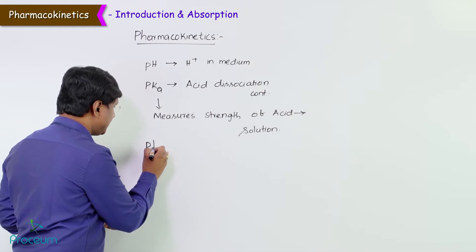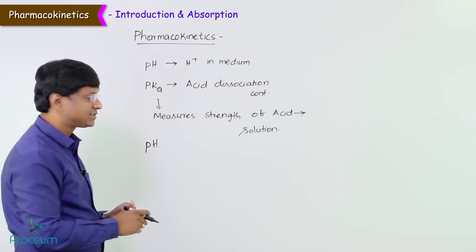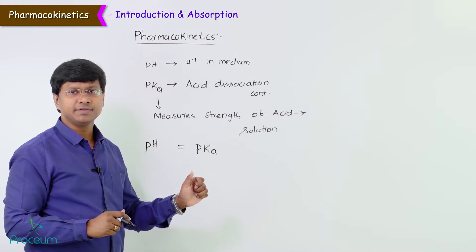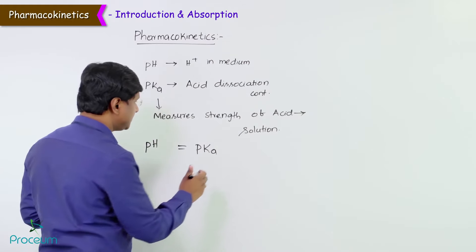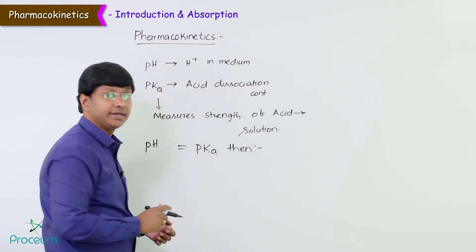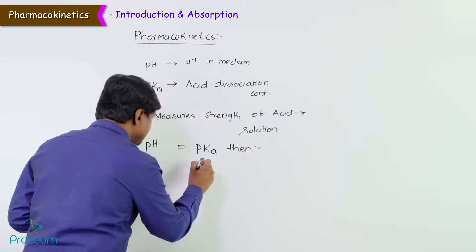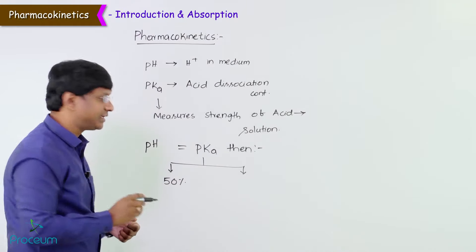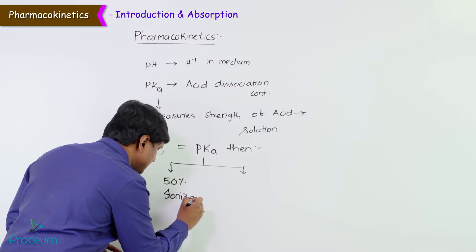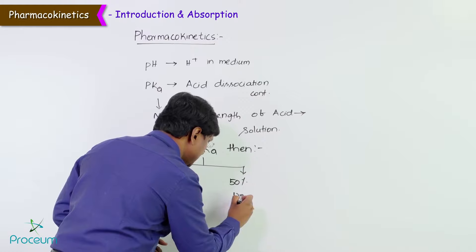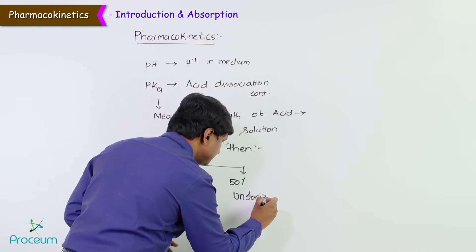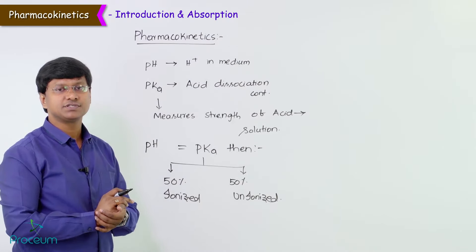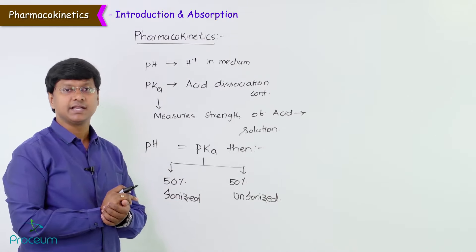If the pH of the medium is equal to the pKa, then remember that 50% of the drug is in the ionized form and 50% of the drug is in the unionized form.